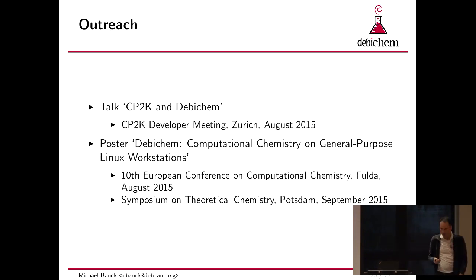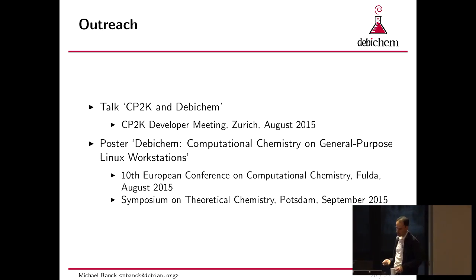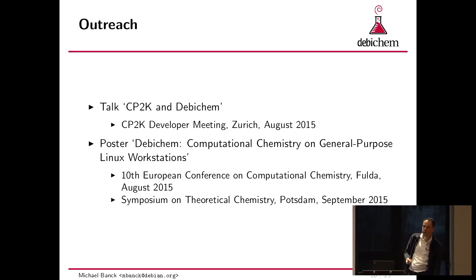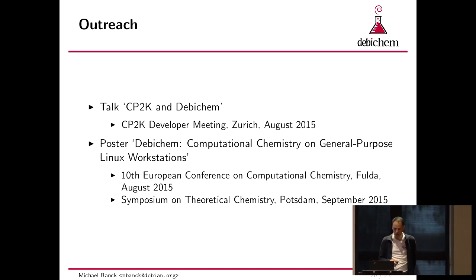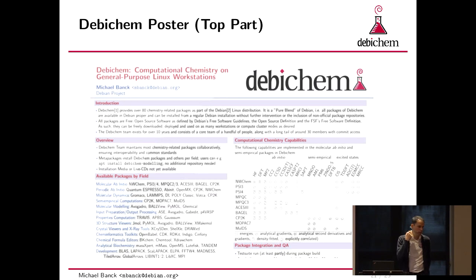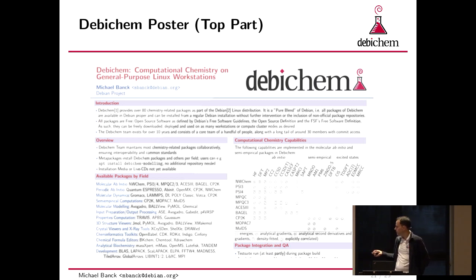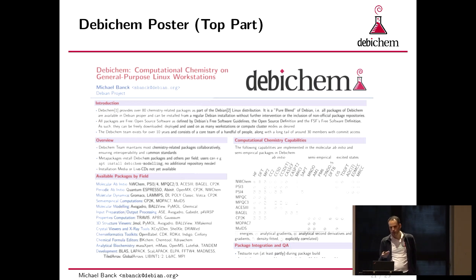I want to talk a bit about outreach. In 2015, I gave a talk about CP2K and Debian in Zurich at the CP2K developer meeting, which was quite nice — there was also a guy from Fedora there. I also presented two posters in the summer of 2015 at the 10th European Conference on Computational Chemistry in Fulda, and a few weeks later at the Symposium for Theoretical Chemistry in Potsdam. I made a Debian poster of all the capabilities of the computational chemistry packages, and got into some quite interesting talks — a lot of those people knew Linux but not really Debian.